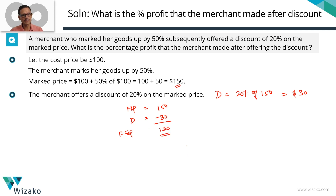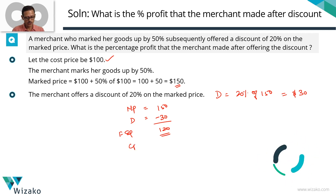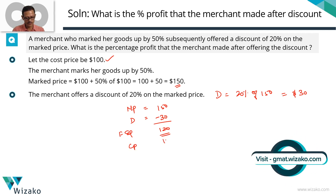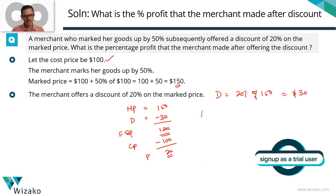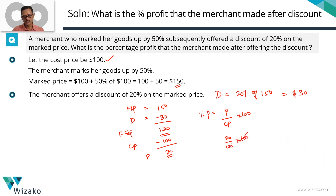What's the profit made by the merchant? Cost is $100 and the final selling price is $120. Cost price subtracted from the final selling price gives us the profit, which equals $20. Percentage profit equals profit upon cost price times 100 — that's 20 over 100 times 100 — which gives us 20%.